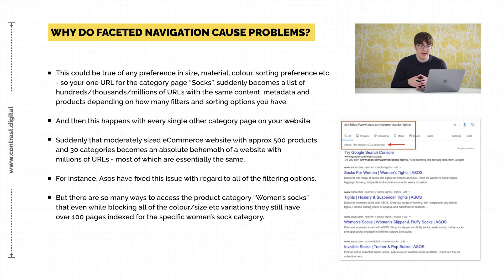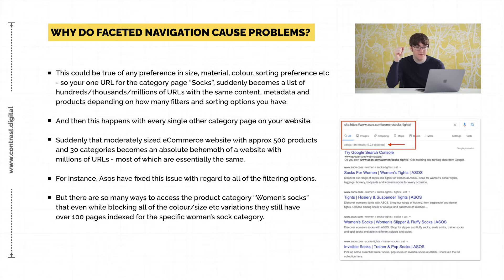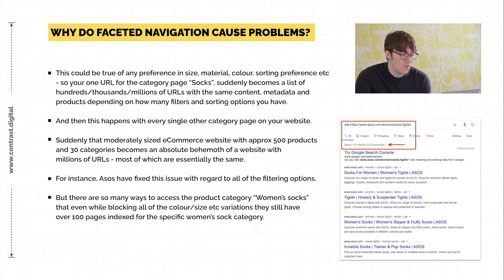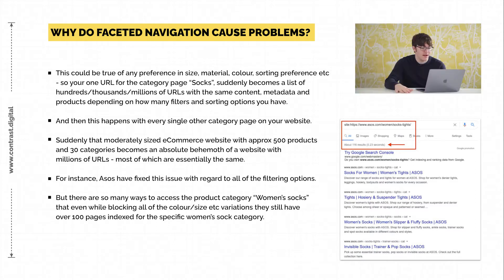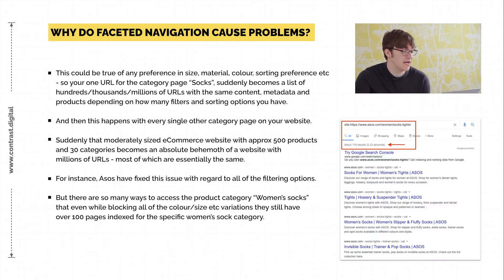To check if this is a problem on your site, you can throw the category page URL into a Google site search using site: followed by your category page URL, and you'll be able to see how many pages are indexed. It doesn't show every page, but it gives you an idea. If you have 500 products across 30 categories and suddenly you've got millions of URLs — many of which are all the same — that's providing no value and will only cause further issues down the line.